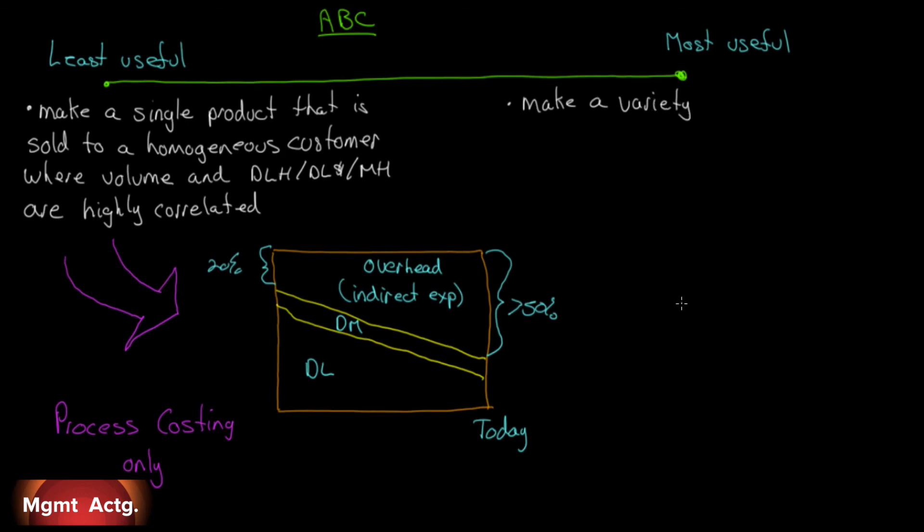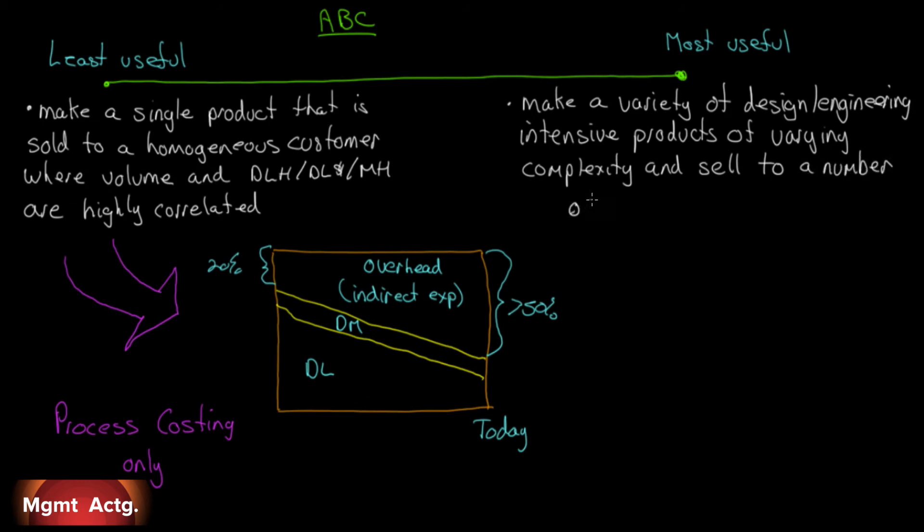It is the most useful when you make a variety of products. And not just a variety of products, but a variety of design or engineering intensive products. Why? Because design and engineering are overhead costs that are not considered as manufacturing costs. They're non-manufacturing costs. If you have a product that you're making that requires a lot of pre-design and engineering, they're not captured in inventory. Those costs are not captured, but they're part of making the product. You make a variety of design or engineering intensive products of varying complexity, and you sell to a number of distinct customer segments. I've just described a business where ABC is most useful. That's a continuum from least useful to most useful, because there is a cost to implementing this and a cost to maintaining it. If the cost is not worth it, don't do it. Yes, it'll give you better information, but you have to weigh the benefits.